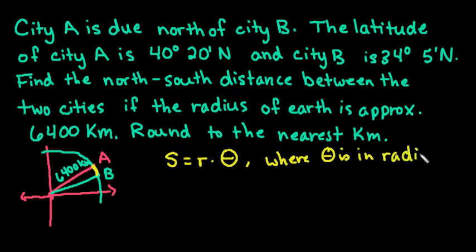Alright, so what we have to do is we have to convert our degrees to radians, but first we have to figure out what is the angle measure in between here. So we have to find theta in between here. So what we're going to do is we're going to find the difference of the latitudes.